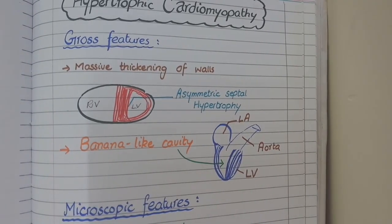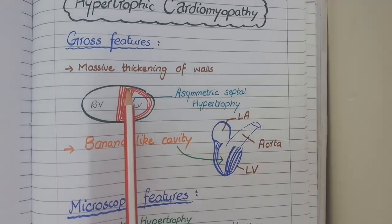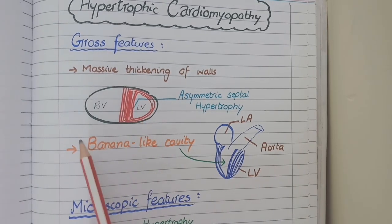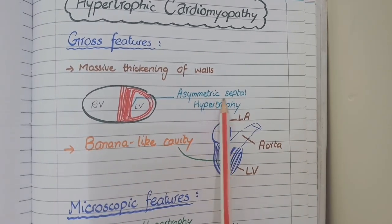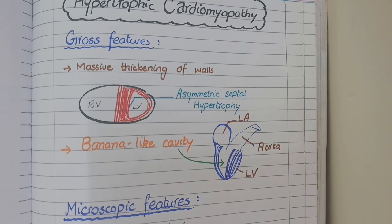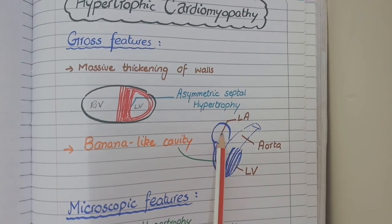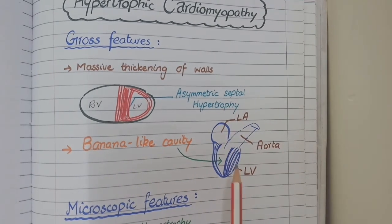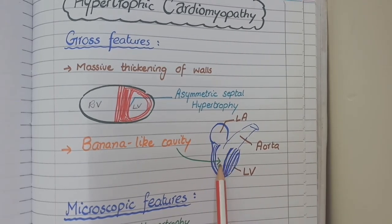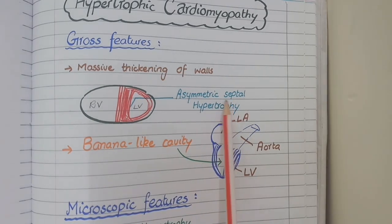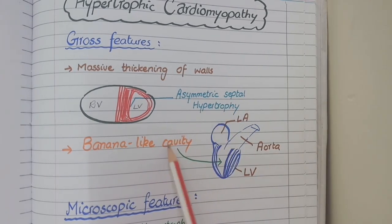In hypertrophic cardiomyopathy, you see a pattern of hypertrophy in which only the thickness of the interventricular septum is increased, and the lateral or free walls of the left ventricle are not affected. Such hypertrophy is called asymmetric septal hypertrophy. Due to the massive thickness of the septum, the cavity of the left ventricle becomes banana-like in shape, known as a banana-like cavity.